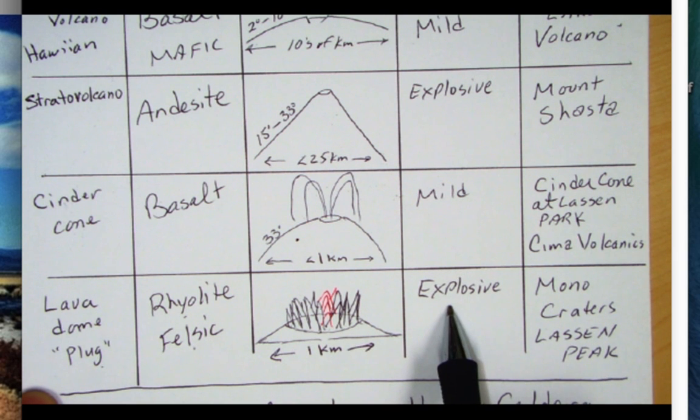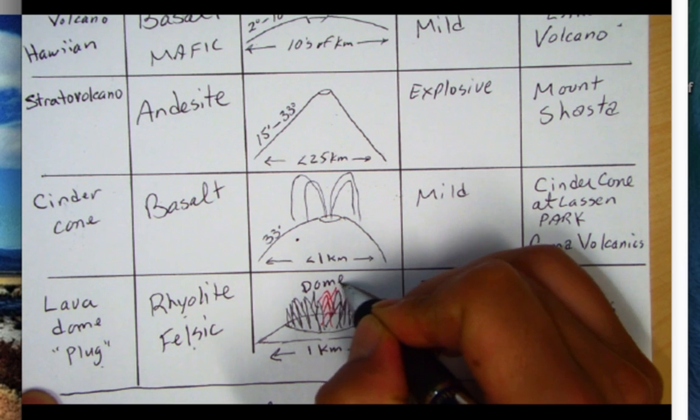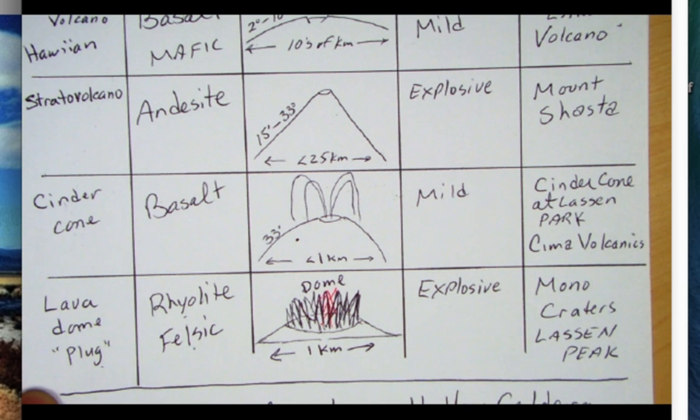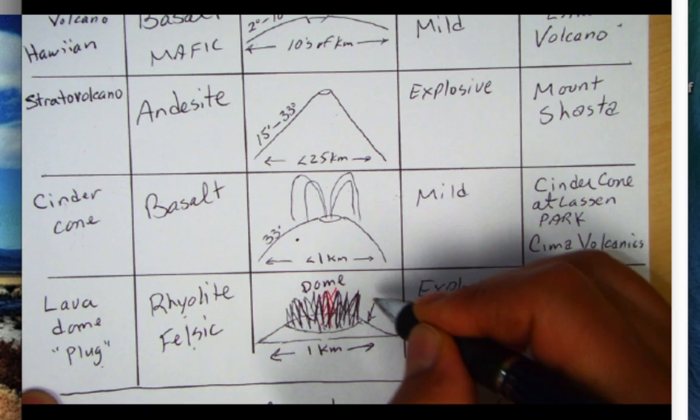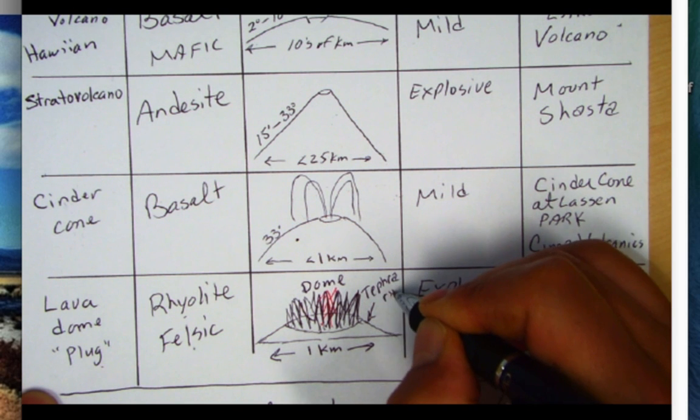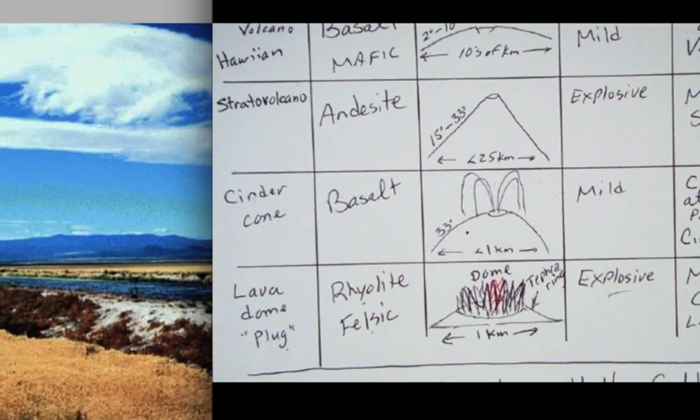It's explosive and another thing that this one has, you'll have the dome here that sits in the vent as this viscous material comes out, but also it's going to have this tephra ring. So the tephra ring is a sort of an apron of finer material that's going to be around this lava dome. Explosive, Mono Craters and Lassen Peak are examples so take a look at some examples here.